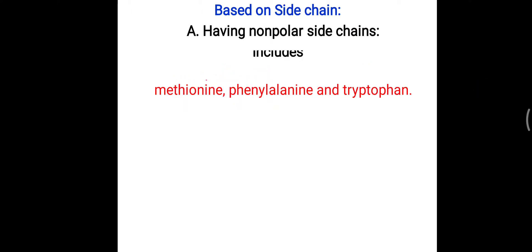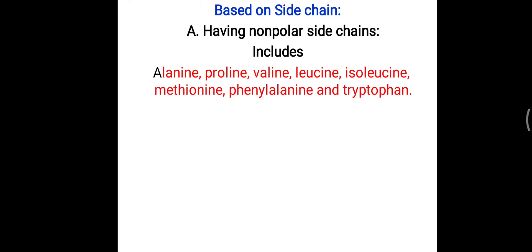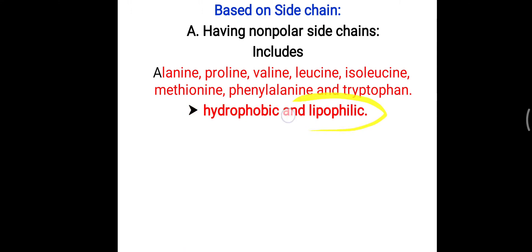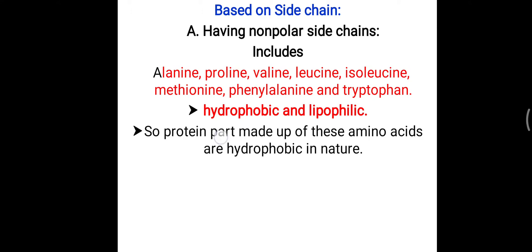Proline is a different kind of amino acid. Methionine has a sulfur present between carbon atoms. Phenylalanine contains a benzene ring, and tryptophan is a heterocyclic amino acid. All these are hydrophobic — they will not be solubilized in water, but they will be solubilized in lipid. So they are lipophilic but hydrophobic — water insoluble but soluble in lipid. Proteins made up of these non-polar side chain amino acids are mostly hydrophobic and will be found in specific parts of the cell.